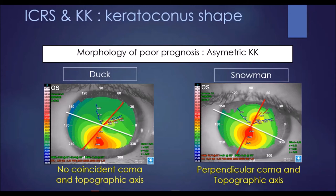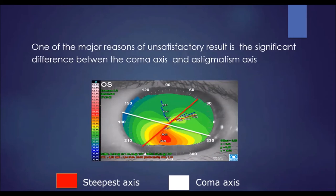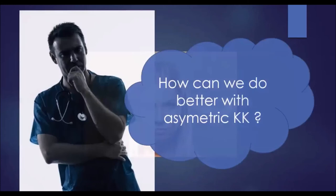Duck and snowman shapes are generally associated with poor prognosis, because in these two cases there is no coincidence between the coma and topographic axis. In a duck morphology case, if we place the ring on the steepest axis we correct astigmatism but not coma, and if we place it on the coma axis we treat coma but over-correct astigmatism. That is why the best approach in these cases is to consider asymmetric rings, which correct both astigmatism and coma aberrations.